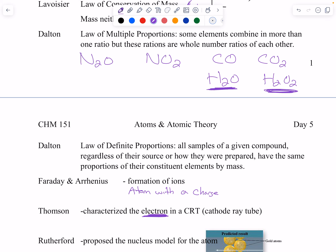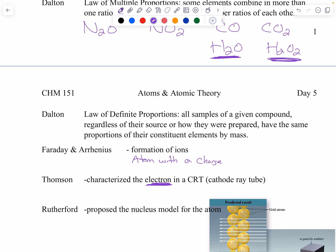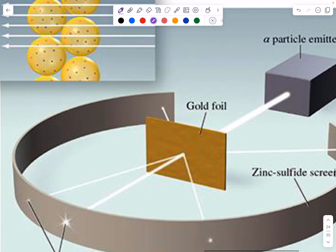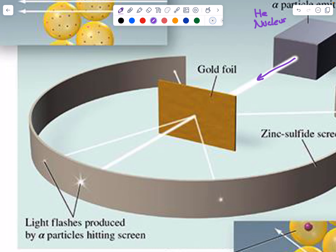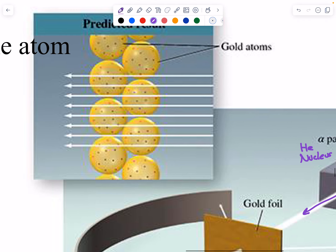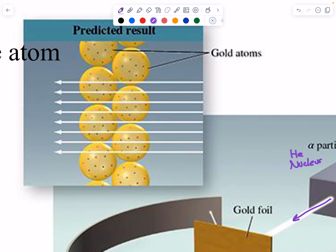Thompson had a model of the atom called the plum pudding model — another name for it is the blueberry yogurt model. That was short-lived because Rutherford came along with the nuclear model. Rutherford did the gold foil experiment: alpha particles, which are helium nuclei, were shot at gold foil with a zinc sulfide screen. Light flashes occur when they hit, so you make it a dark room. The expectation with the plum pudding model was that most particles would just pass right through.